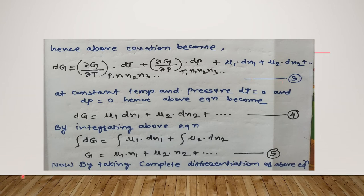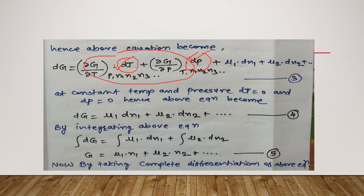Now, if we consider constant temperature and pressure, then dT is equal to 0 and dP is equal to 0. So both the dT and dP terms vanish, and what remains is only μ1·dN1 plus μ2·dN2 — and so on for all components. This gives us equation number 4.